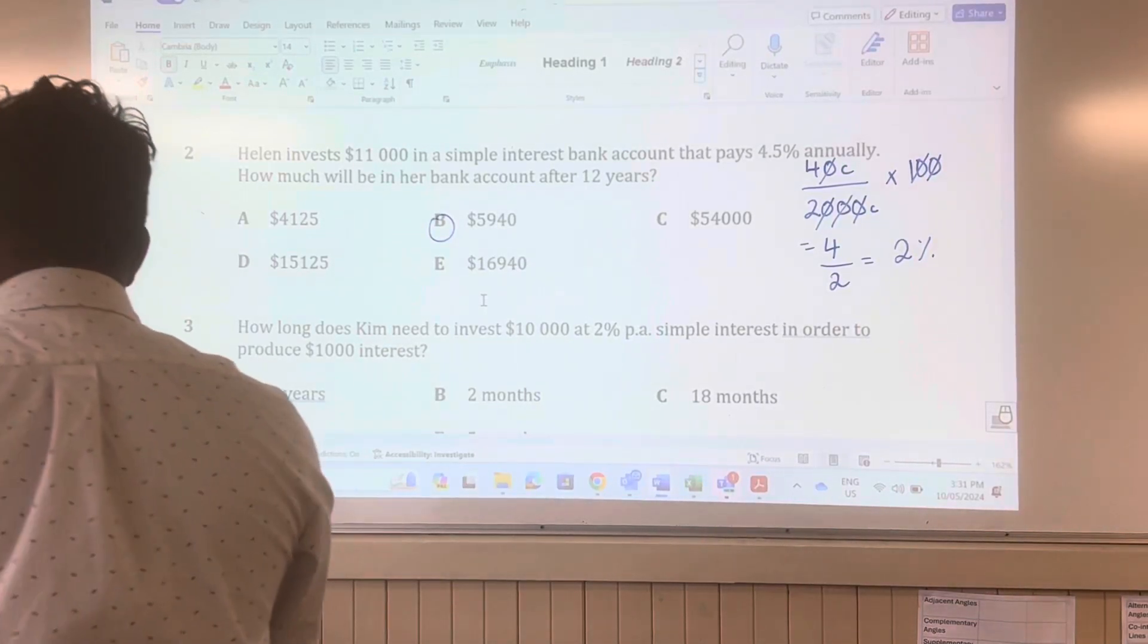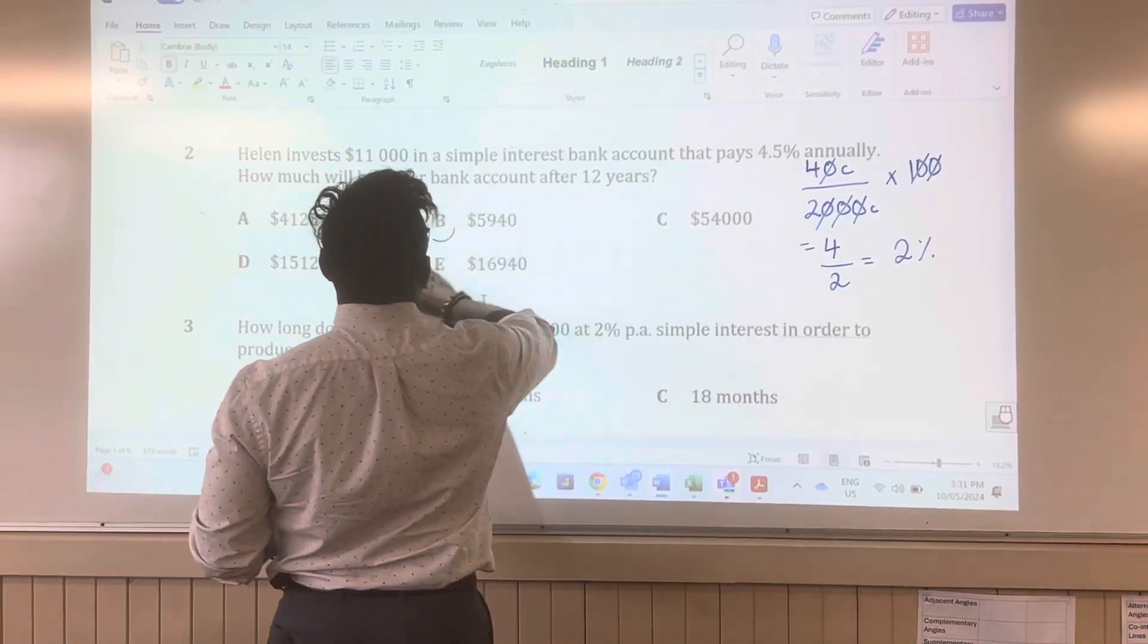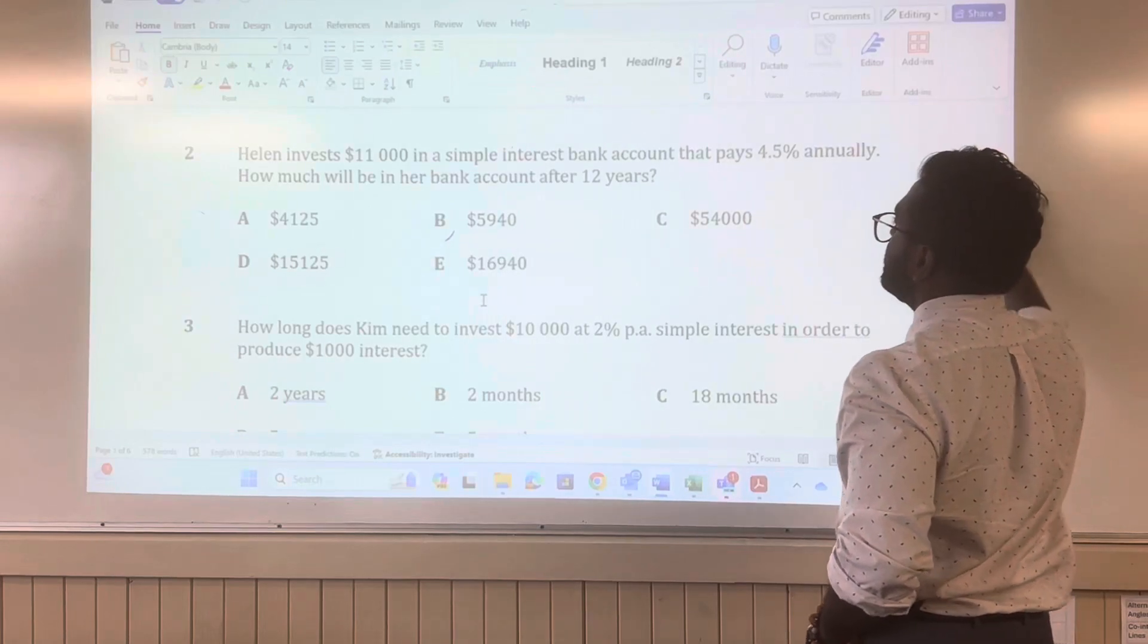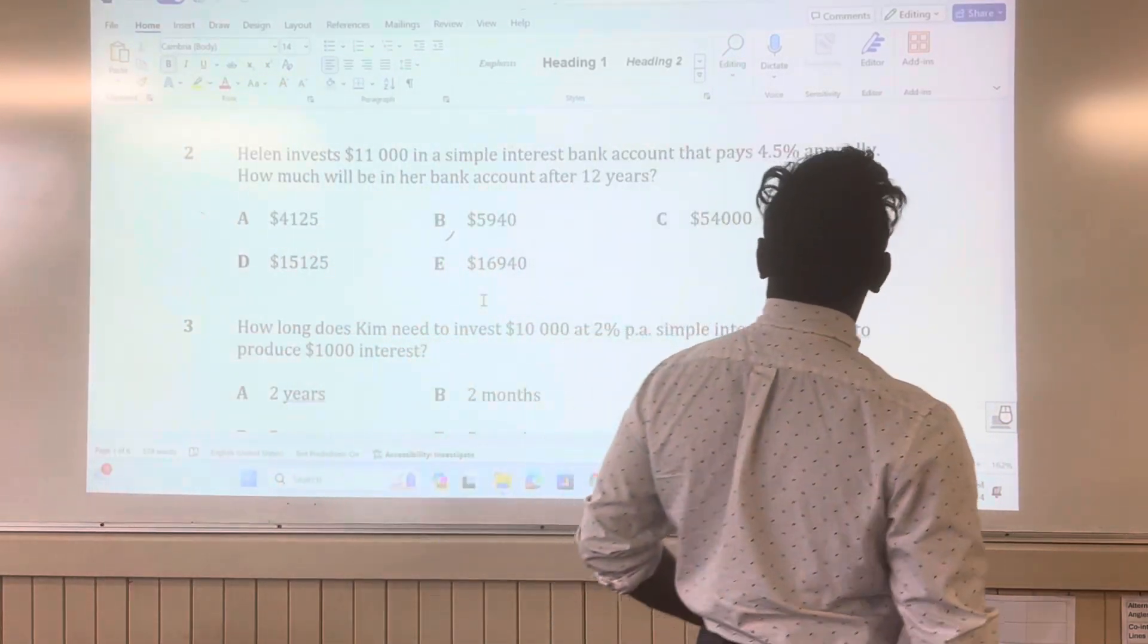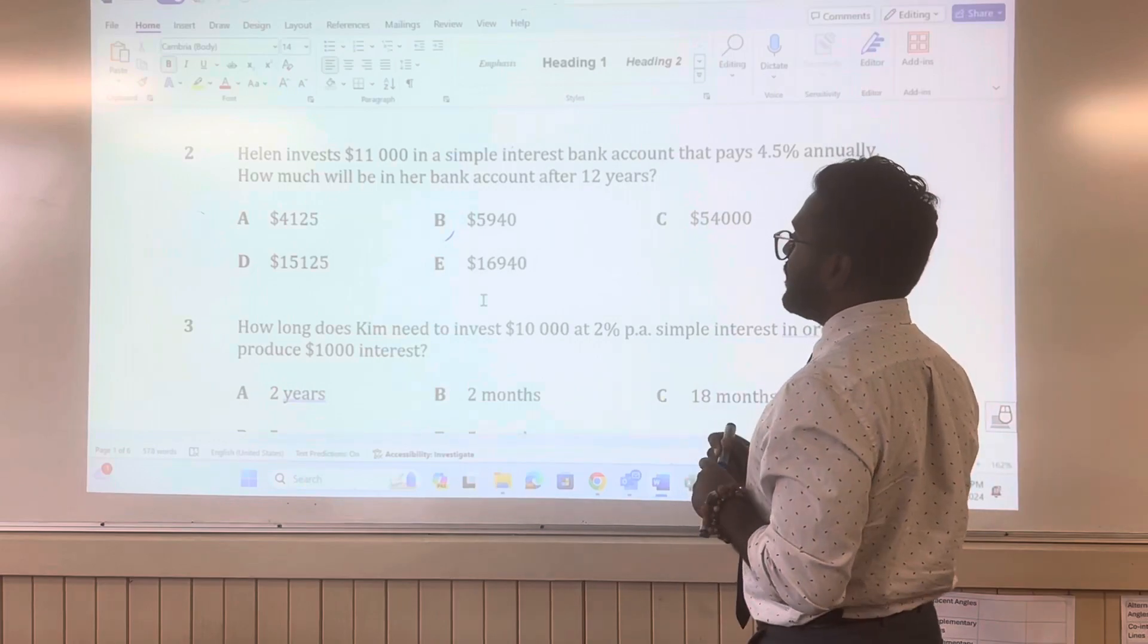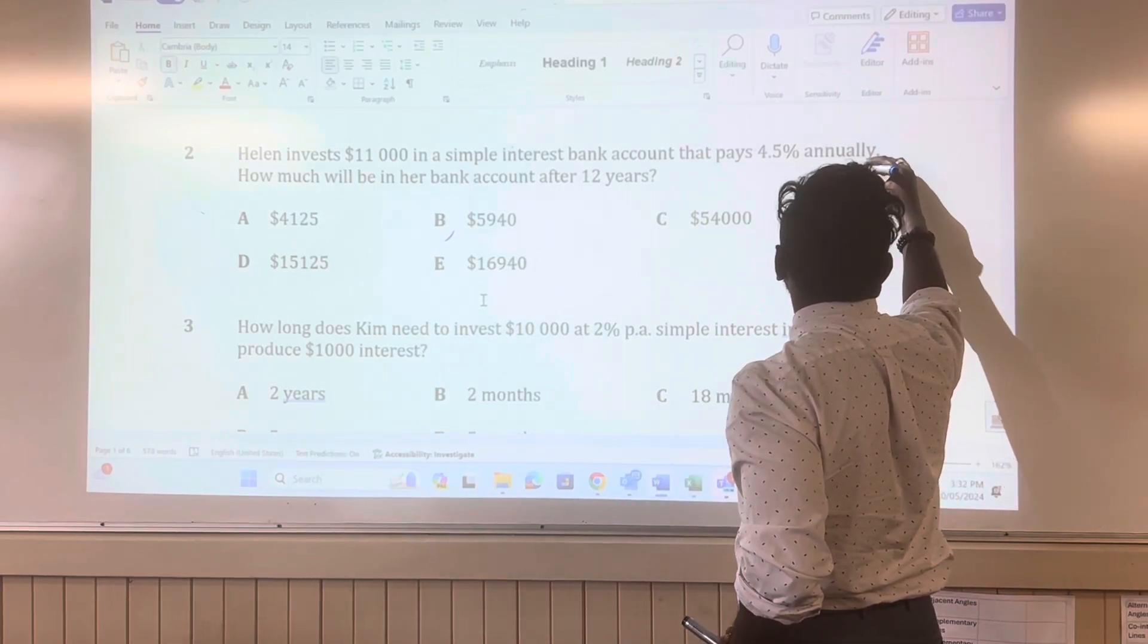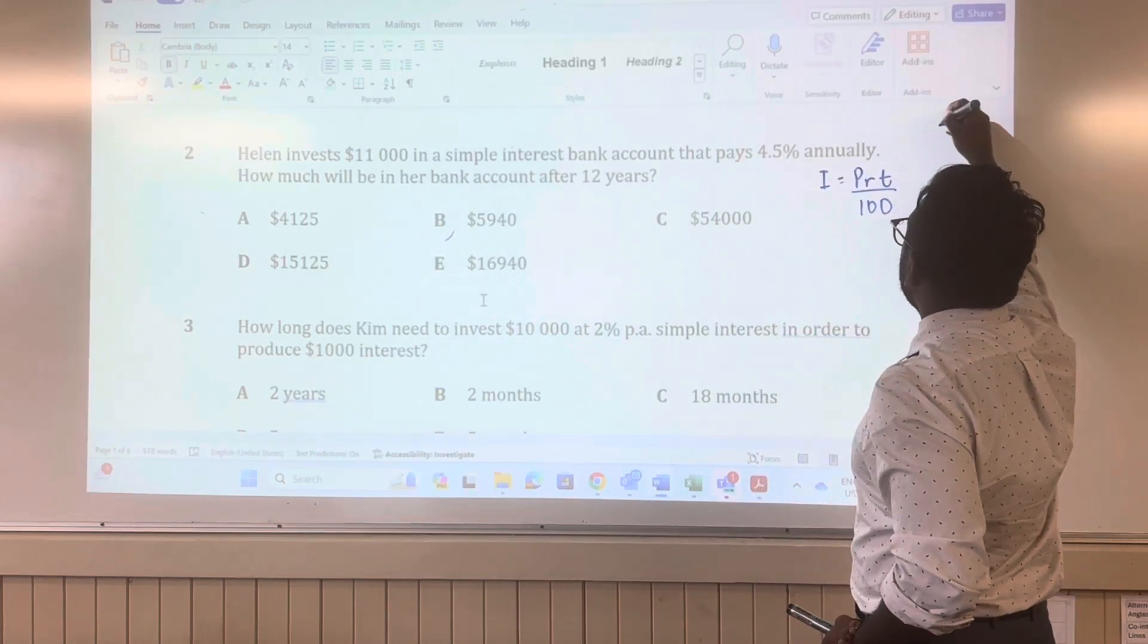Next question we're going to be looking at here is Helen invests $11,000 in a simple interest bank account that pays 4.5% annually. How much will be in a bank account after 12 years? So what do we have? We've got that formula which was I is equal to PRT over 100.